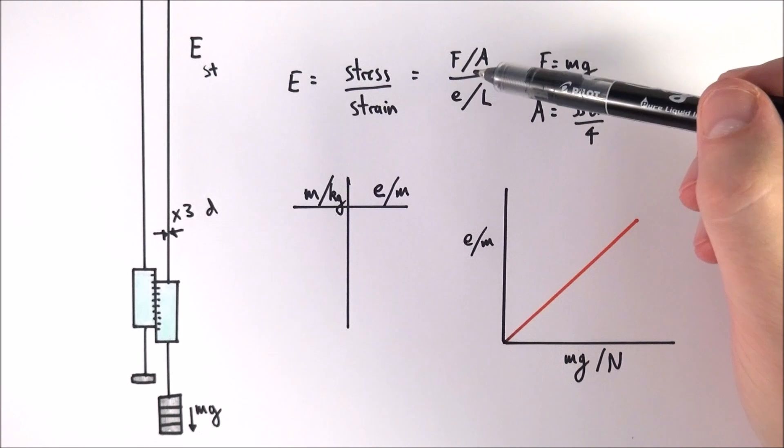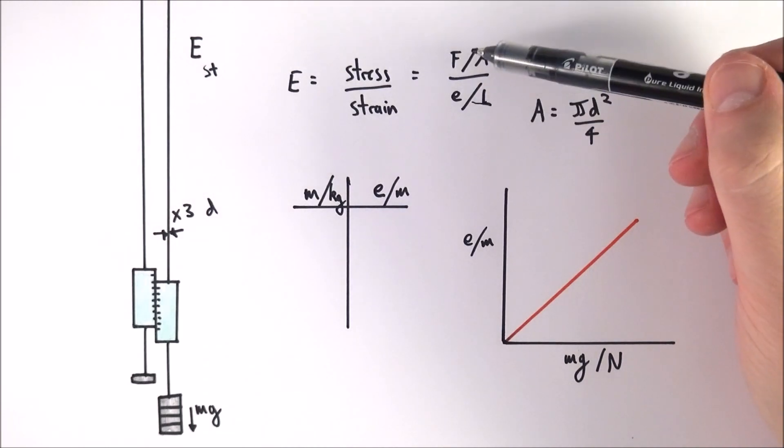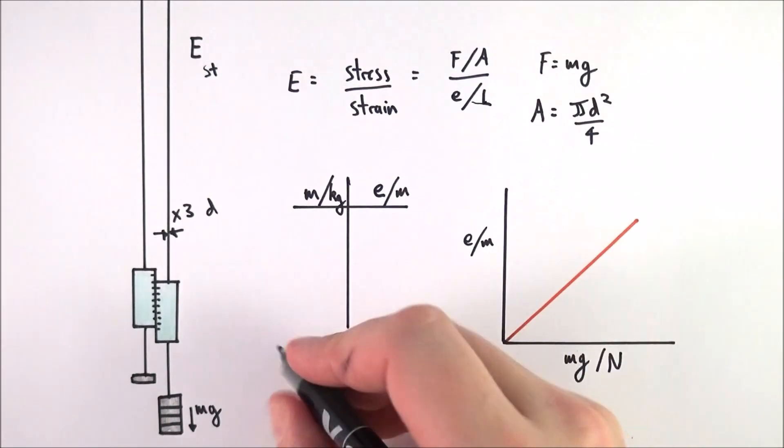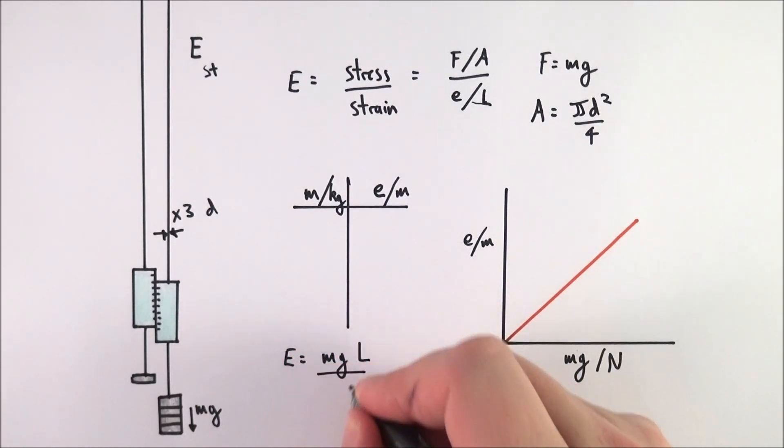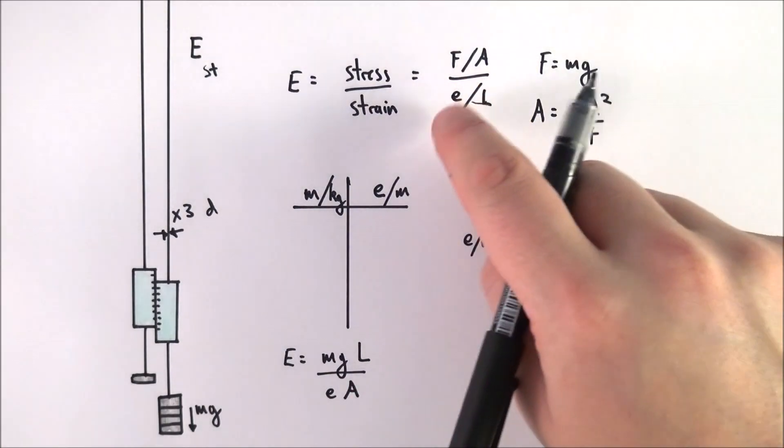If we think about this equation up here, what I can do is rearrange this by bringing the L up to the top and the A down here. We can also write that Young's modulus is equal to mgL over EA. This is just another equation using this one here with mg substituted for F.